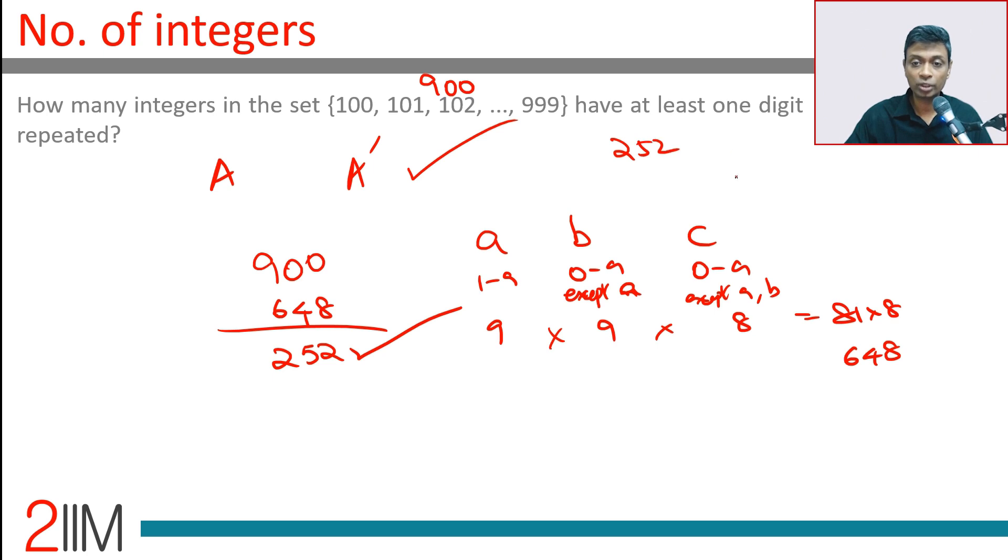So we are counting numbers like 252, 116, 444, all of them.